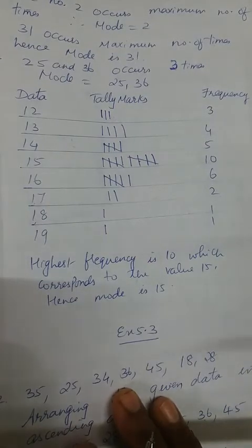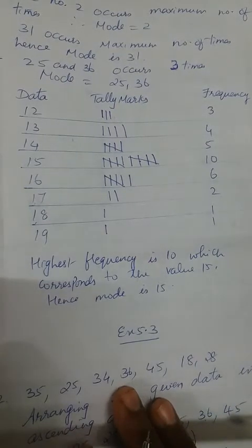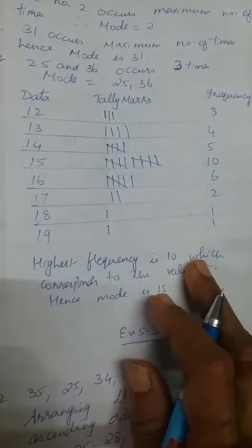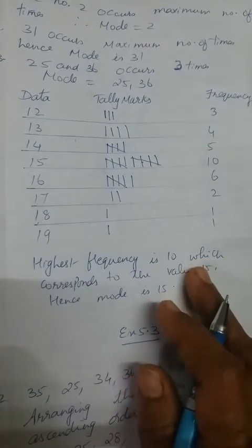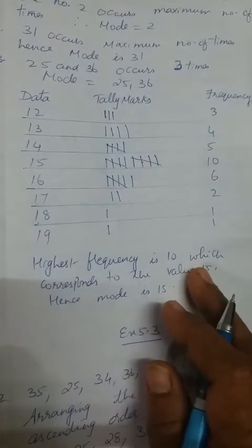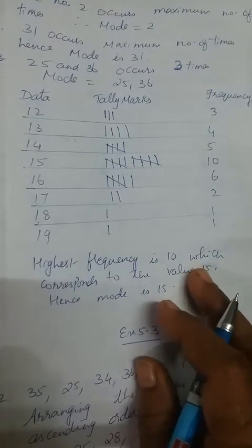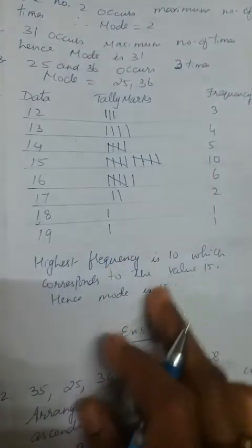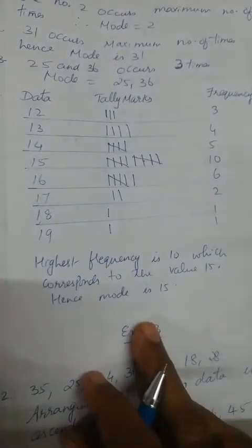Here you have to write the frequency — frequency means how many times that number is repeating. So 12 has frequency 3, 13 has 4, 14 has 5, 15 has 10, 16 has 6, 17 has 2, 18 has 1, 19 has 1. Highest frequency is 10, which corresponds to the value 15. Hence mode is 15.